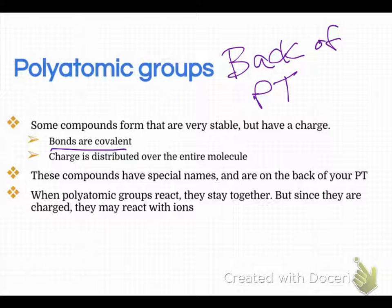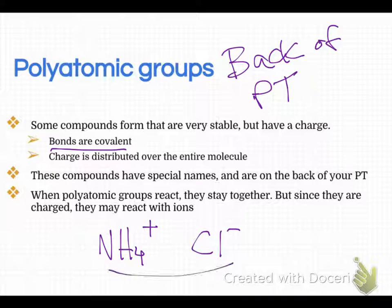Most of the time, all of them have funny names which are all listed on the back of the periodic table. The thing to remember about these groups is they stay together. They are covalently connected to each other. Covalent bonds are really strong. However, because they have a charge, they can react with something else. So let's take the example of NH4+. If NH4 is sort of sitting around doing nothing and a Cl- happens to come along, these two things are going to react together because they have a positive and a negative charge. They'll form a compound like this.